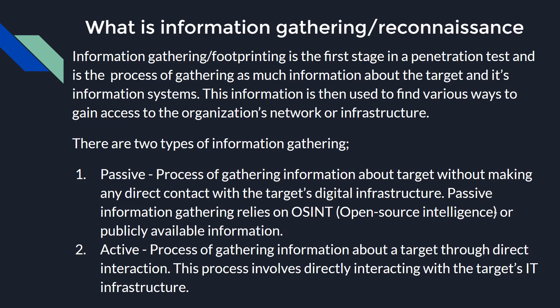There are two types of information gathering that entail two different types of interacting with your target or your client. Let's start with understanding passive information gathering or reconnaissance. Passive information gathering is the process of gathering information about a target without making any direct contact with the target's digital infrastructure, or really not engaging with the target actively. Passive information gathering relies on OSINT — open source intelligence — or publicly available information to map out the organization's information systems, their structure, etc.